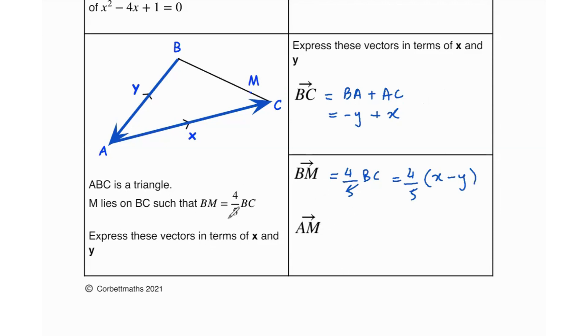And AM now, so let's draw a line for AM. AM would be AB plus BM. AB is given as y, and BM is 4 fifths of x minus y. So when you add them up, that's going to give us 5y plus 4x minus 4y over 5, which equals y plus 4x over 5. That is your AM.